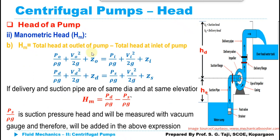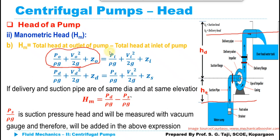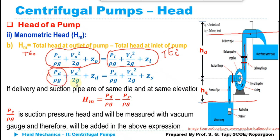The manometric head can also be written using total energy equations. Applying Bernoulli's equation at the free surface of liquid and at the outlet, we get: PO upon rho G plus VO squared upon 2G plus ZO at the outlet, and PI upon rho G plus VI squared upon 2G plus ZI at the inlet. At the outlet this corresponds to the delivery pipe: PD upon rho G for pressure head, VD squared upon 2G for velocity head, and ZD for elevation. At the inlet: PS upon rho G, VS squared upon 2G, and ZS for elevation of the suction pipe from the datum.